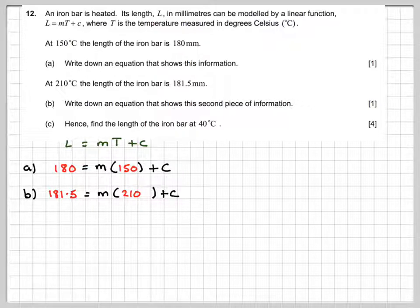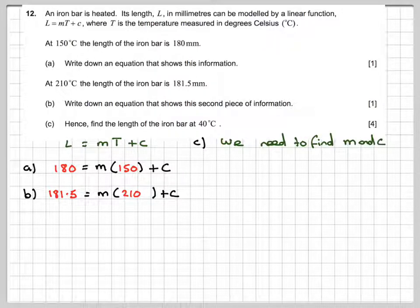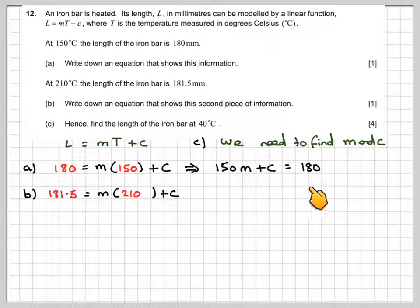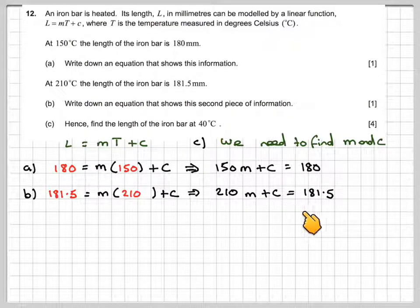Now what we've got to do is find the length of the iron bar at 40 degrees C, but we've got two unknowns, m and C. So we've got to make two simultaneous equations. Rewriting the first one as 150m plus C equals 180, and rewriting the second one as 210m plus C equals 181.5. Now we can use the GDC to solve these.